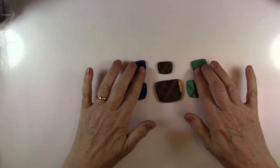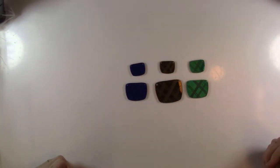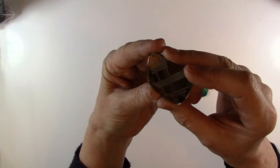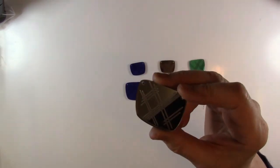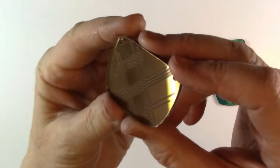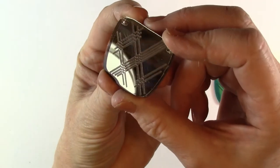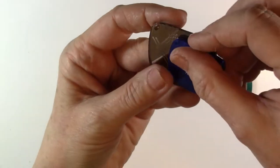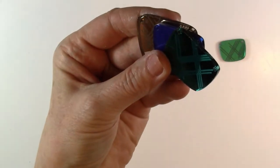I have here a set of components for a necklace that are etched. Now if I hold that close you can see that this is a mirror etched piece of acrylic which I think is really pretty. You've got a bronze, you've got a blue, and you've got a teal which go really nicely together.